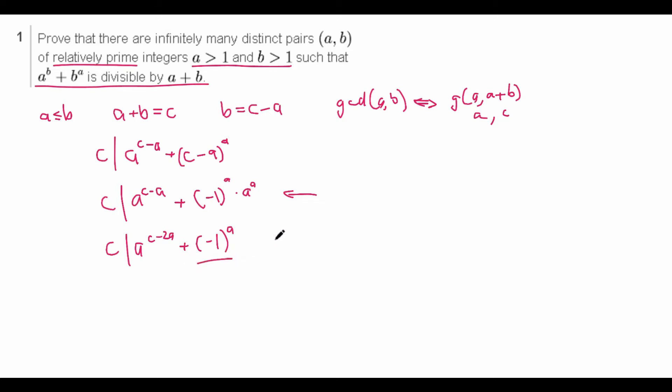So we want this to be negative one. So let's just set a to be odd for now. This will be our first assumption, a is odd. Like so. So this turns into c divides a^(c-2a) minus one. So now this is really good because we have this very familiar format.